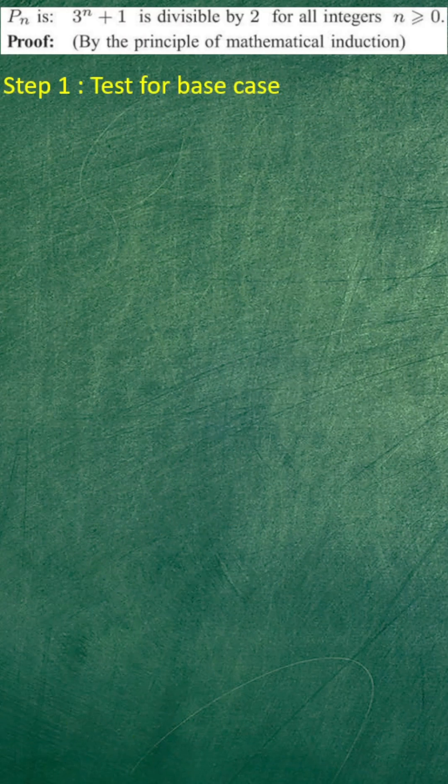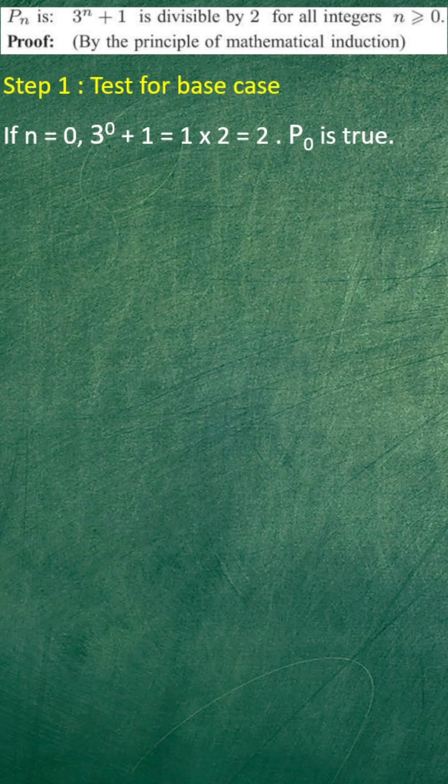Here's the question. The first step is to test for the base case. In this case, the base case happens when n is equal to 0, so we're going to substitute 0 into the proposition. We obtain 2, which proves the proposition.